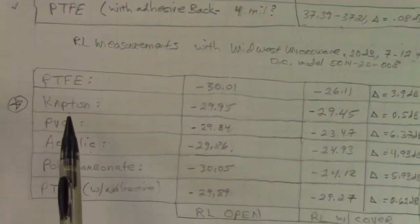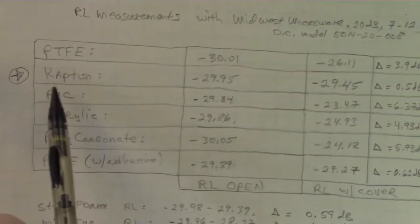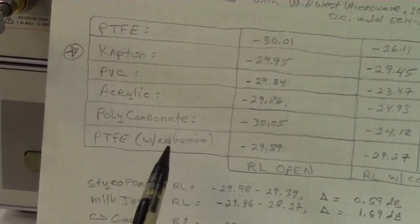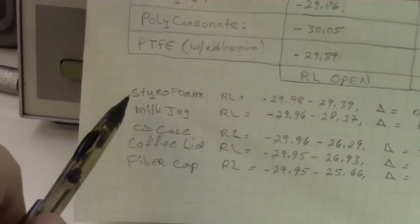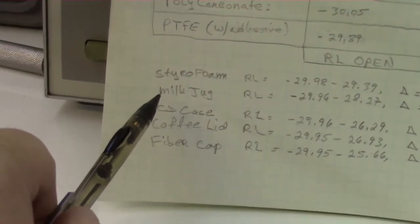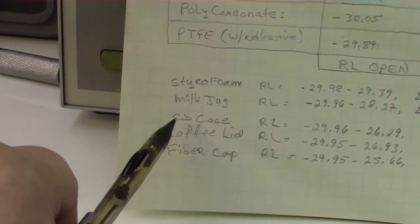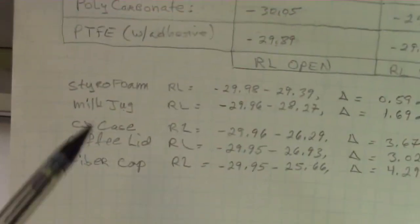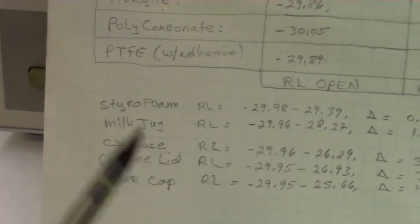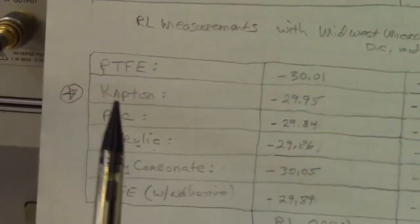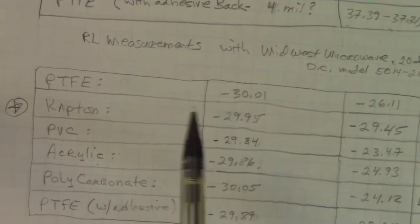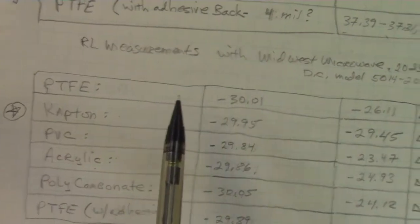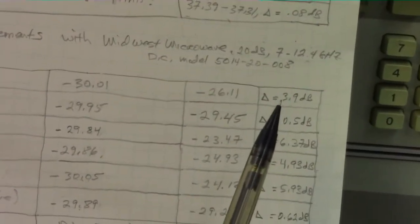These results were a lot more stable. What we did is we measured the Kapton, the PVC, acrylic, polycarbonate, and the Teflon with adhesive. Just for the heck of it, because I had them handy from a previous test, I had some styrofoam sheet, some milk jug plastic, a CD case which I think is just plexiglass or polycarbonate, coffee lid, Maxwell House lid, and we have some plastic, some kind of high-density like polyethylene that came off of a fiber container. So just for the heck of it we measured what the return loss of the horn was with and without these plastics put on top.